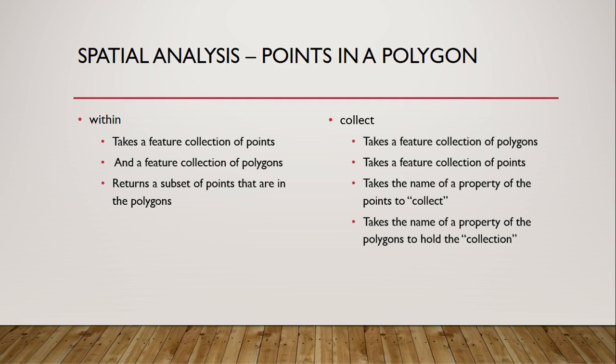We're only going to have one polygon — the buffered line — and we will collect the status attribute of all the eagle nest points that fall within that half mile buffer. This points to an advantage that storing data in GeoJSON has over traditional flat table storage formats such as shapefiles and even geodatabases. You can't store an array of values in a database field, so this solution would be much harder to implement. But in GeoJSON, a property can hold anything, including arrays and objects, which can themselves hold arrays and objects. So it's a very flexible data storage format.